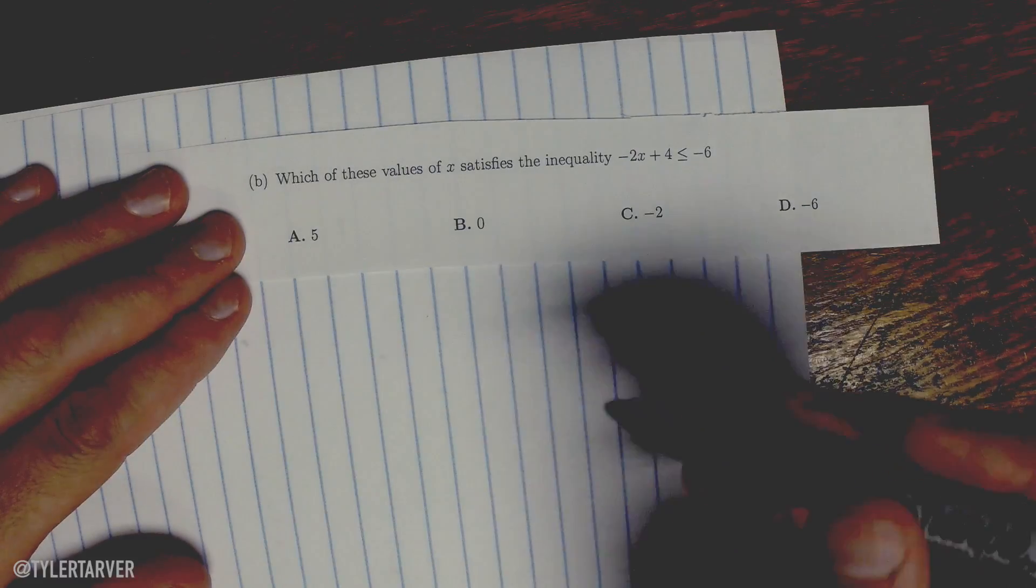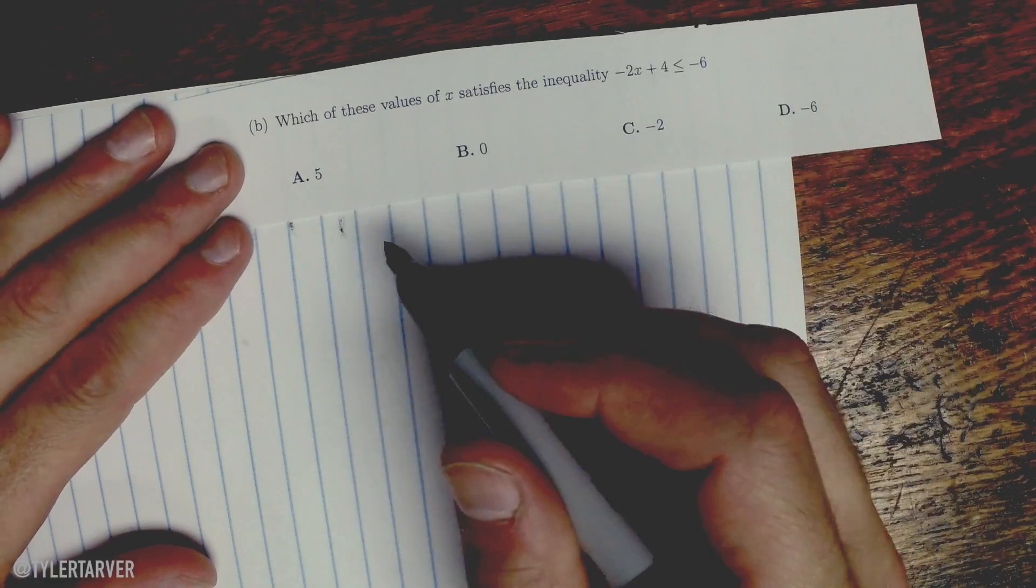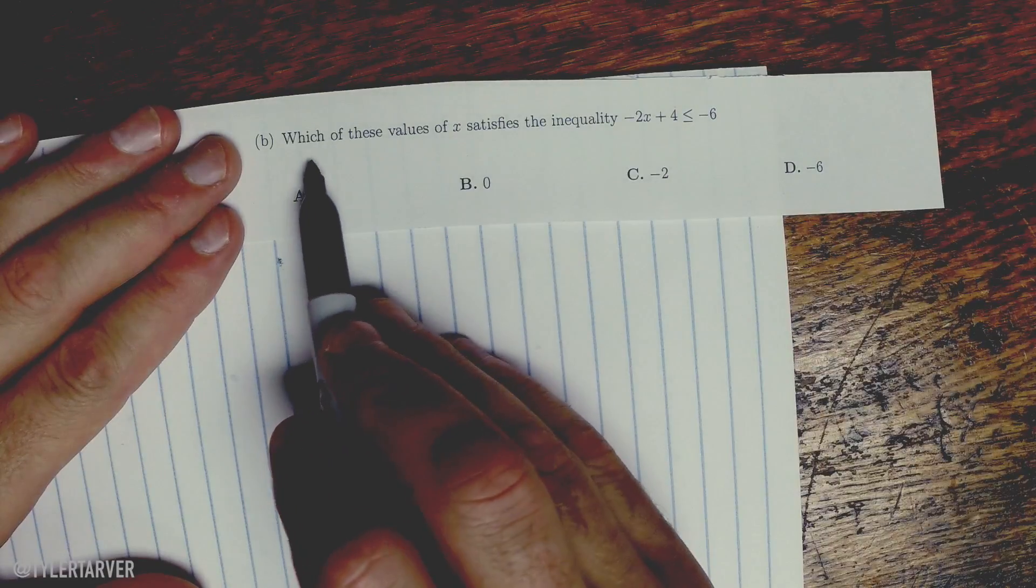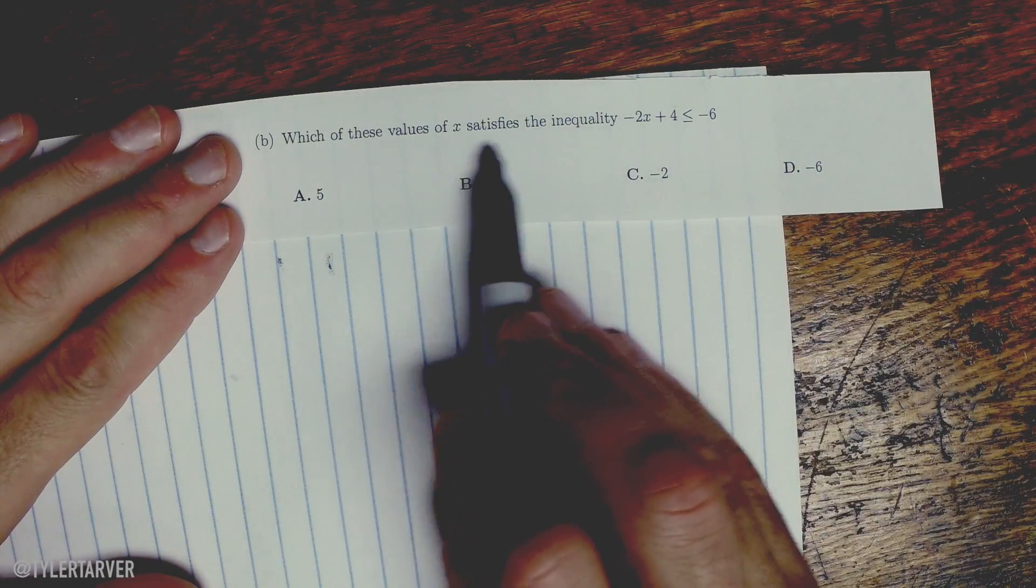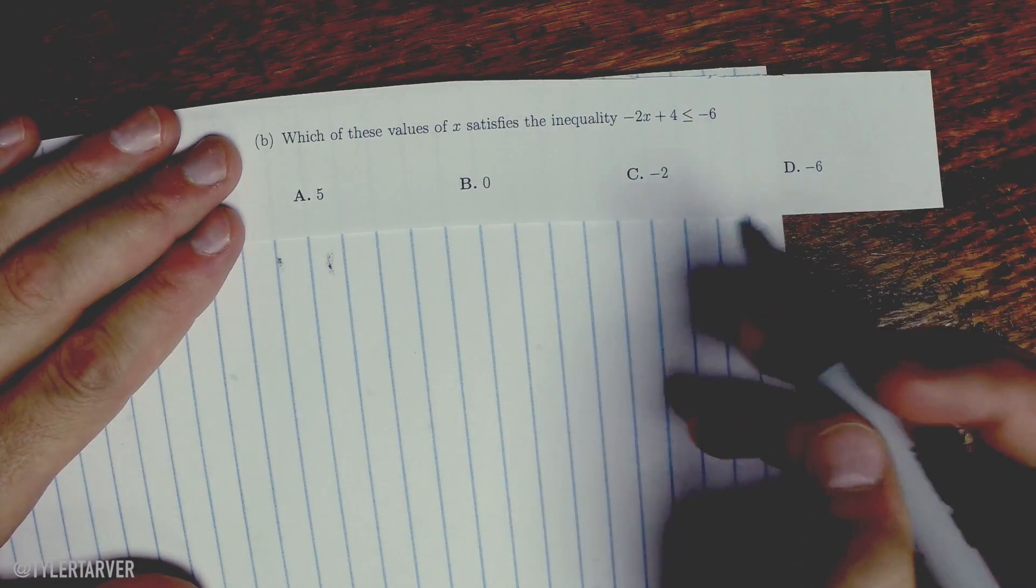And break. Okay, so the best way to work this problem in my opinion, which hopefully is correct because I'm about to teach it to you, is to just plug them in and see what works. That's all I want to know - which one of these values of x satisfies the inequality. So it means three of them aren't going to work, one of them is. So we got to find the one that is.